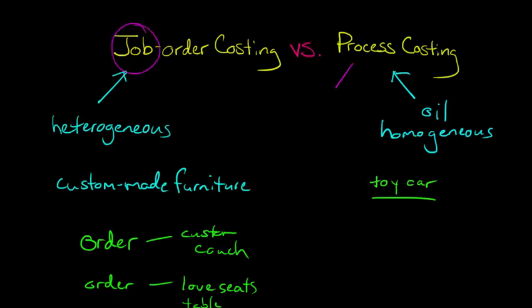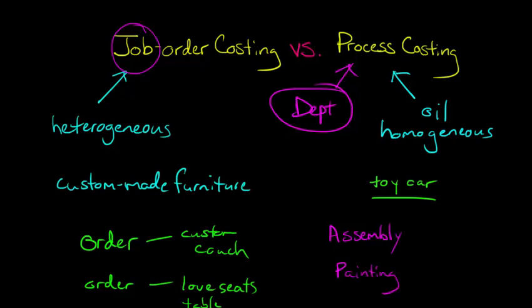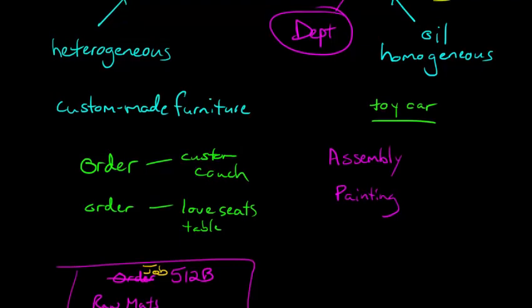And if we're process costing, it's by department. So the costs are organized or flow through departments. And what I mean by that is this. So these toy cars, let's just say we look and we say we've got three departments. We've got assembly of the toy car, right? We put the toy car together. And then we've got painting of the toy car. So after we've assembled it, we paint it. And then we have, finally, packaging, right? We have to sell it. We put it in some plastic wrap.